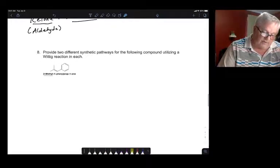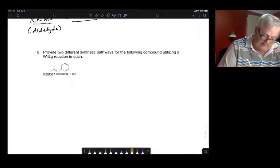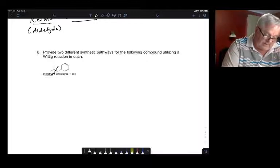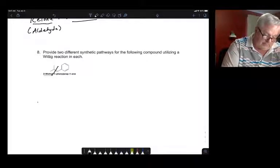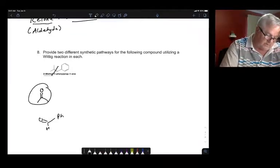Finally, provide two different synthetic pathways for the following compound, utilizing a Wittig reaction. So you just break that in half and see if you can get there. But all you have to do is break that bond and put an oxygen there. And we could have broken it the other way and put our oxygen here. So these are the two compounds you could have. You could have made it from this or you could have made it from this.